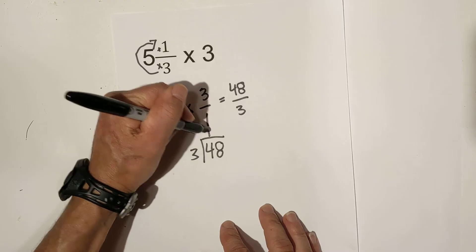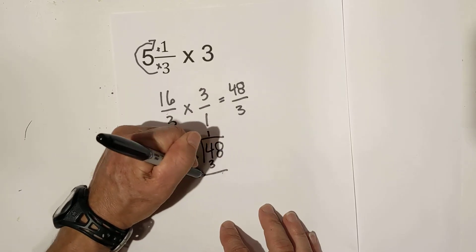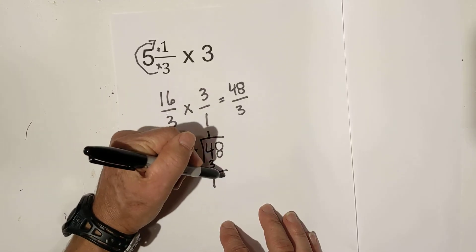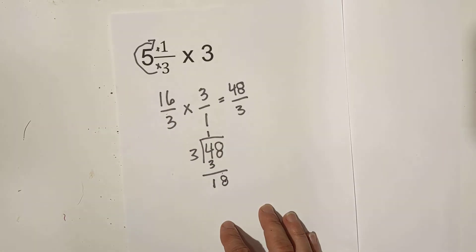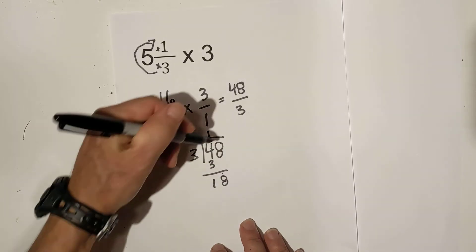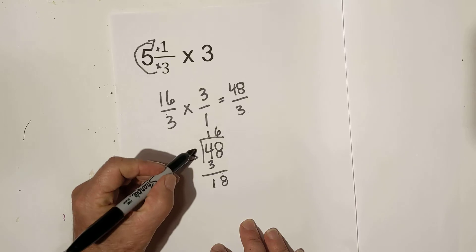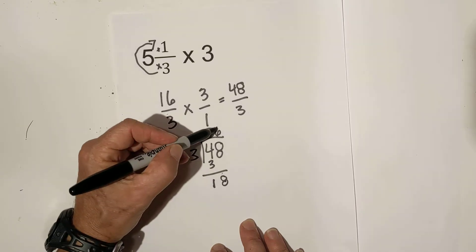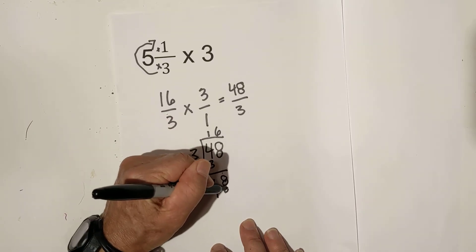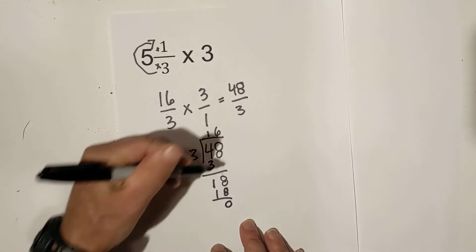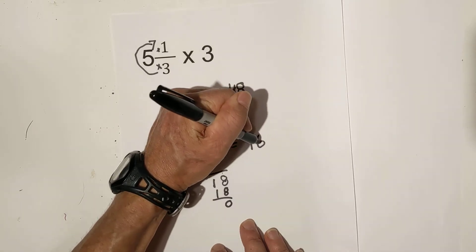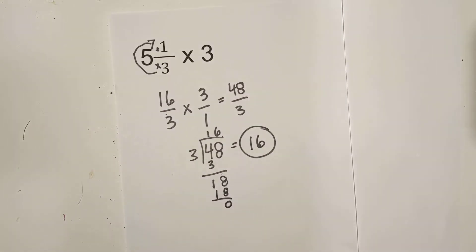3 goes into 4, 1 time. Bring down the 8. Because 4 minus 3 is 1. Bring down the 8. 3 goes into 18, 6 times. 6 times 3 is 18. And look at this. No remainder. So it is 16. 5 and 1 third times 3 equals 16.